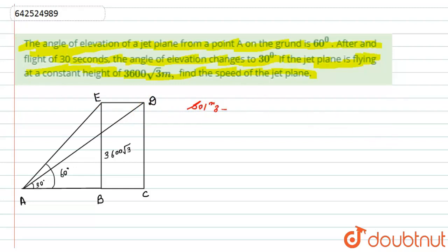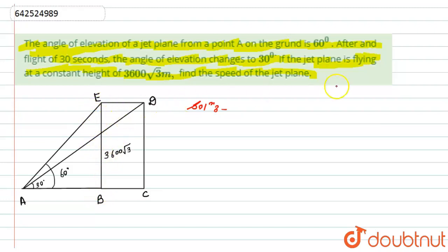What is given to us: there is a jet plane flying at a constant height of 3600√3 meters. Let E be the first position of the plane, making an angle of elevation from the ground of 60 degrees. After 30 seconds, the plane's position becomes D, the second position, from which the angle of elevation changes to 30 degrees. The height of the plane remains the same, so EB = 3600√3 and DC = 3600√3.